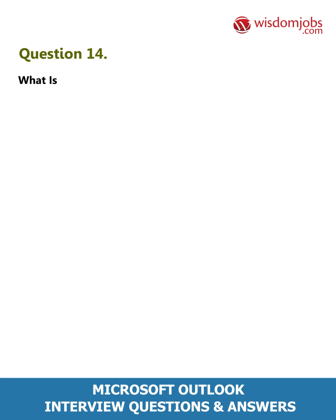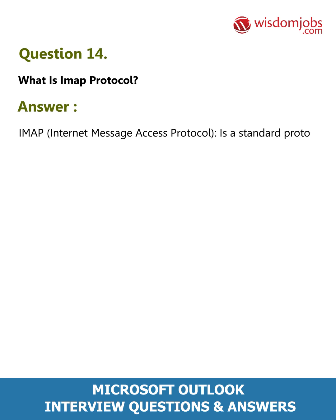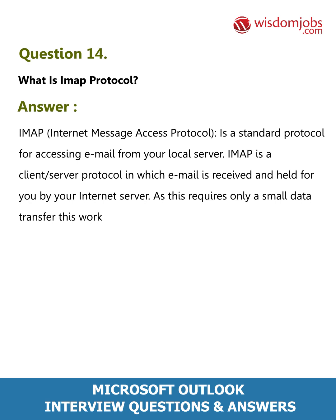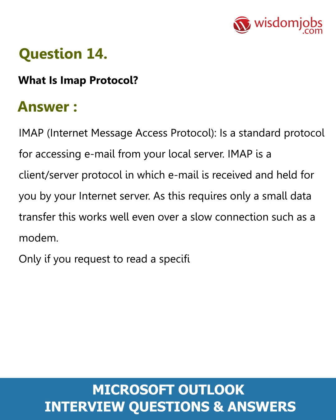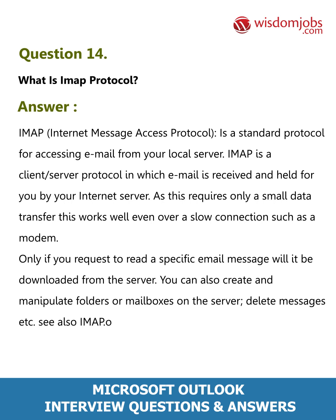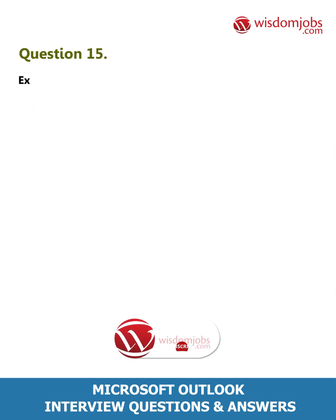Question 14: What is IMAP protocol? Answer: IMAP (Internet Message Access Protocol) is a standard protocol for accessing email from your local server. IMAP is a client-server protocol in which email is received and held for you by your internet server. As this requires only a small data transfer, it works well even over a slow connection such as a modem. Only if you request to read a specific email message will it be downloaded from the server. You can also create and manipulate folders or mailboxes on the server and delete messages.